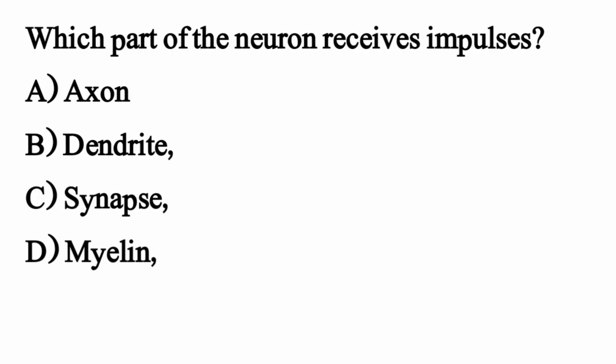Which part of the neuron receives impulses? The right option is Option B — Dendrite.